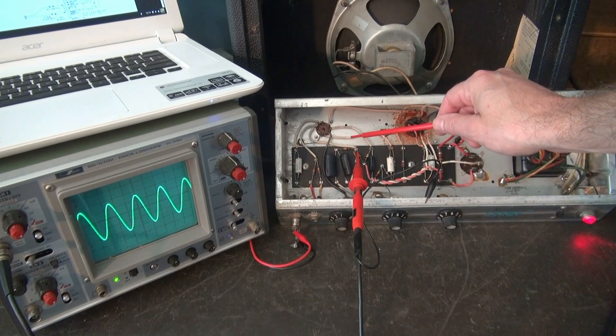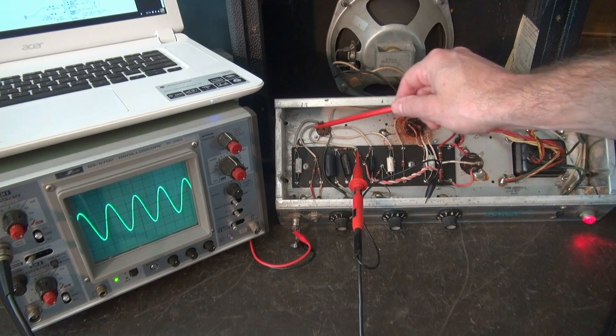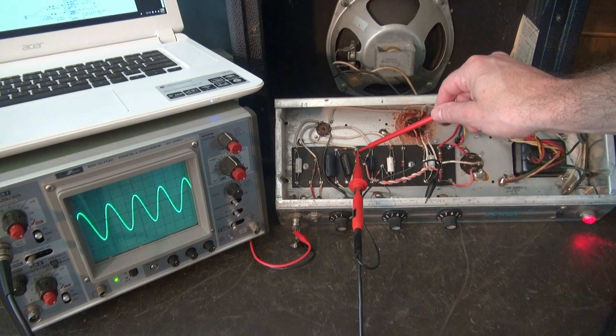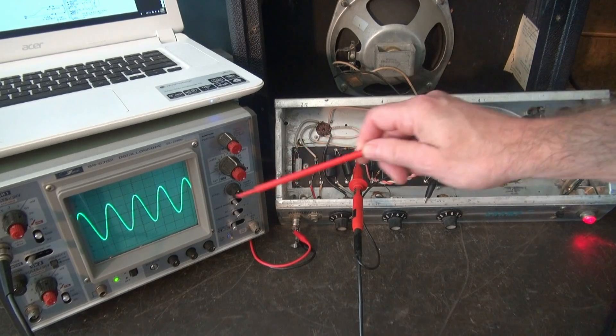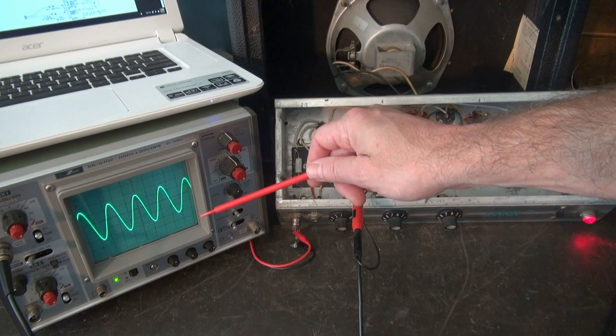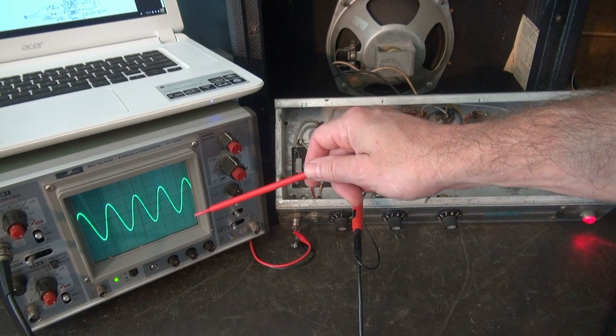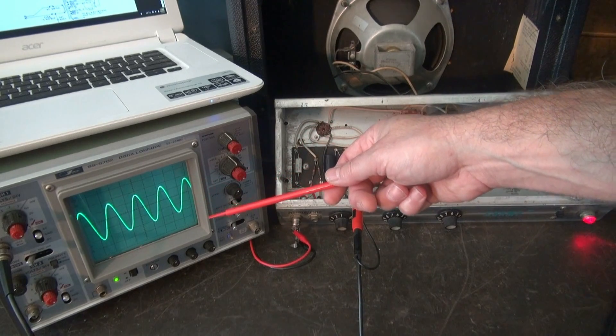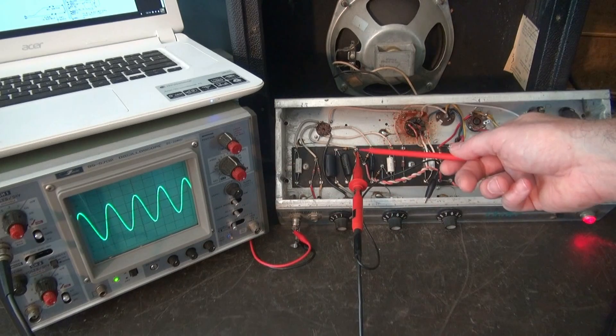So now I'm on pin 1, which is this wire here, and it's going to its plate resistor, which is 100K ohm resistor. So there is the output of that triode. Now, I had to increase my range to 2 volts a division rather than 50 millivolts per division because now we have gain.